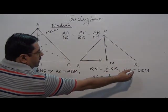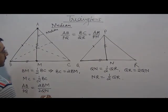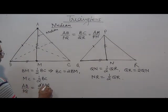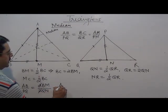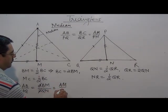QR can be written as 2 times QN. So 2, 2 cancelled out. AB upon PQ is same as BM upon QN, is same as AM upon PN.